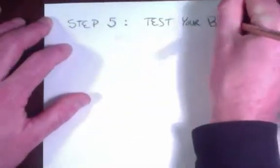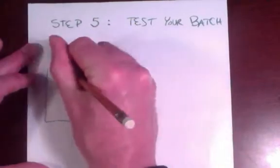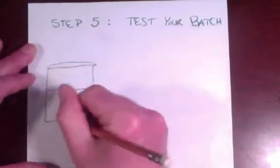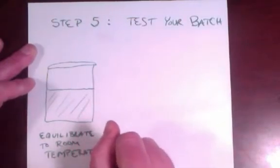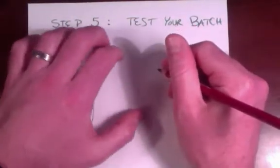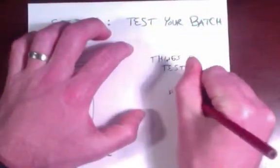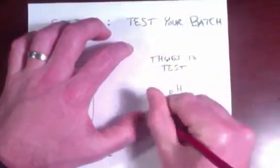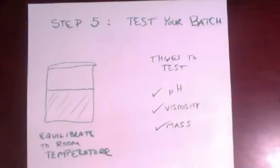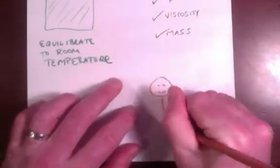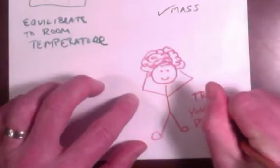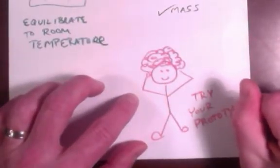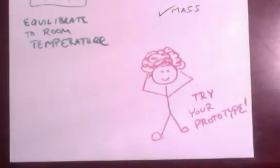Step five, test your batch. Once you've finished your formula, you'll want to test it to see how successful you were. After letting the sample equilibrate to room temperature, you take appropriate measurements like pH and viscosity to see if they're within the specifications you set out. Also, weigh the batch to see how much water weight was lost during the heating and cooling process. If you lost more than a few percent of water, you may want to add that water back to make up the difference. In addition to the specification tests, you should also do some performance tests to see how well the product functions. At the very least, try the product on yourself. If the formula meets your satisfaction, then you'll want to do a stability test.